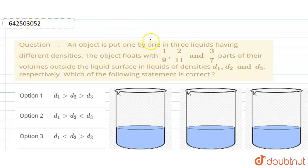Hello everyone. An object is put one by one in three liquids having different densities. The object floats with 1/9, 2/11, and 3/7 parts of their volumes outside the liquid surface in liquids of densities d1, d2, and d3 respectively. Which of the following statement is correct? There are four options given here.